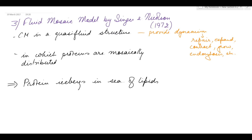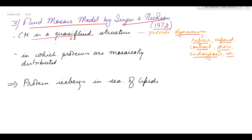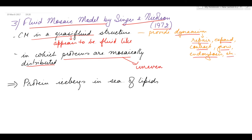The applicable model of the cell membrane is the fluid mosaic model, given by Singer and Nicholson in 1972. According to this model, the cell membrane is a quasi-fluid structure which provides dynamism to the cell — helping in repair, expansion, contraction, growth, endocytosis, etc. The term quasi-fluid means it appears to be fluid-like but is not a fluid. The proteins are mosaically distributed, meaning unevenly distributed with no fixed positions.